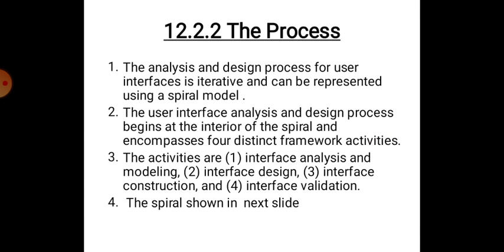The analysis and design process for user interfaces is iterative and can be represented using a spiral model. The process begins at the interior of the spiral and encompasses four distinct framework activities: first, interface analysis and modeling; second, interface design; third, interface construction; and fourth, interface validation.